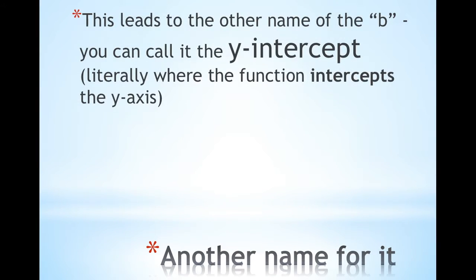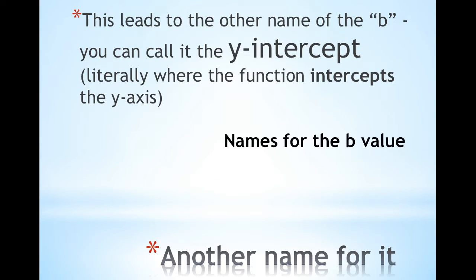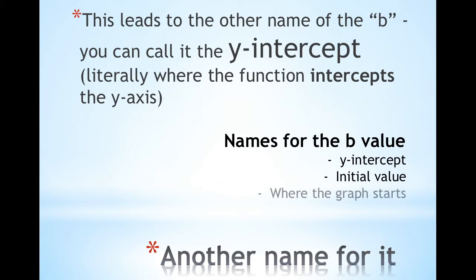Because of this, another name for B or the initial value is called the y-intercept — literally where the function intercepts the y-axis. So just to list off a few names for the B value: you can call it B, call it a y-intercept, or call it the initial value.